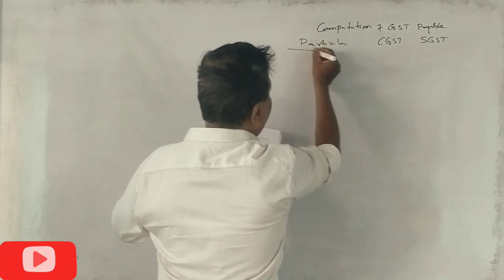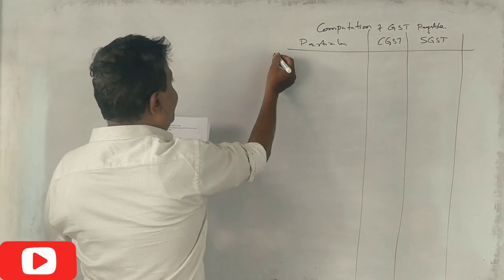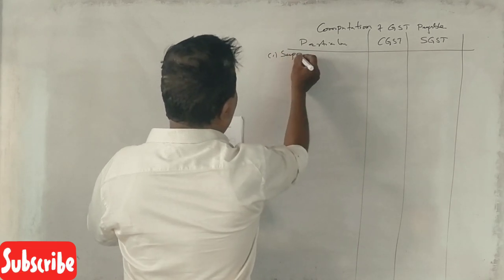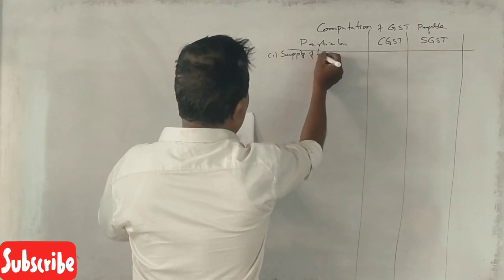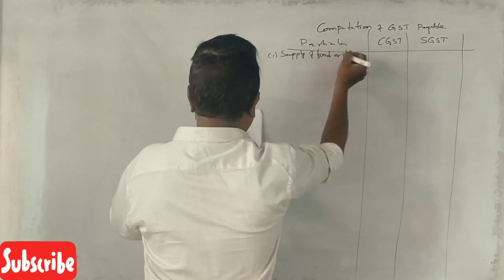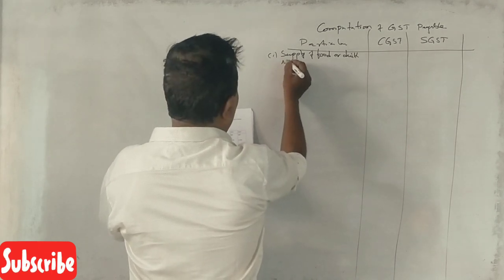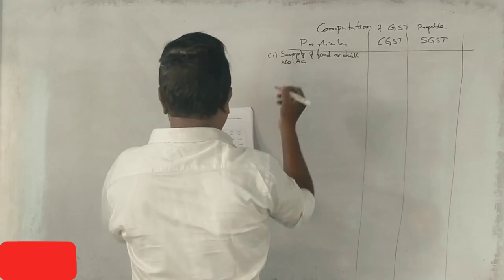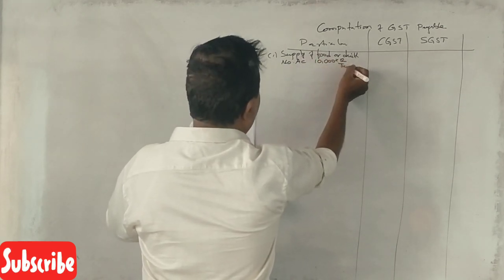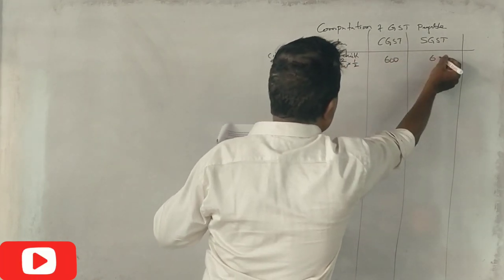Supply of food and drinks, not having AC. 12 percent rate. This is 600, 600.